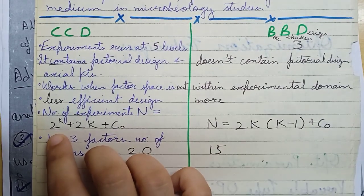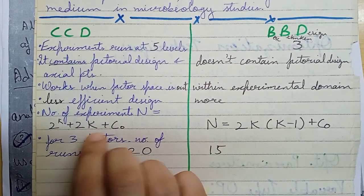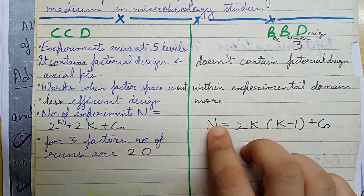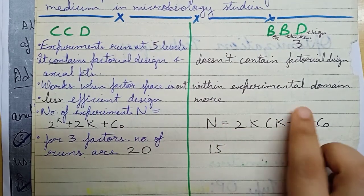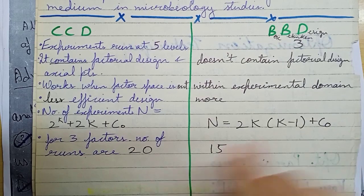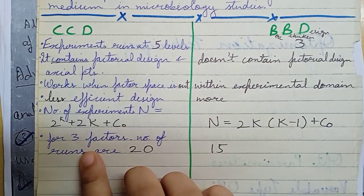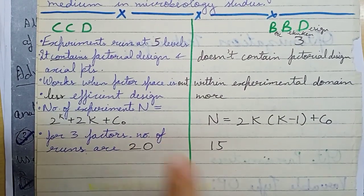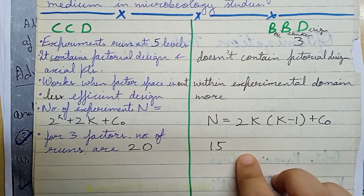In CCD, the formula for number of experiments is 2^k + 2k + c0. In BBD, n = 2k(k-1) + c0. For three factors, CCD requires 20 runs while BBD requires 15 runs.